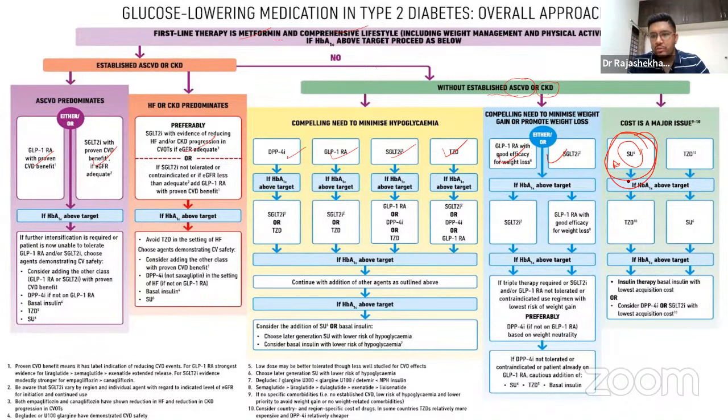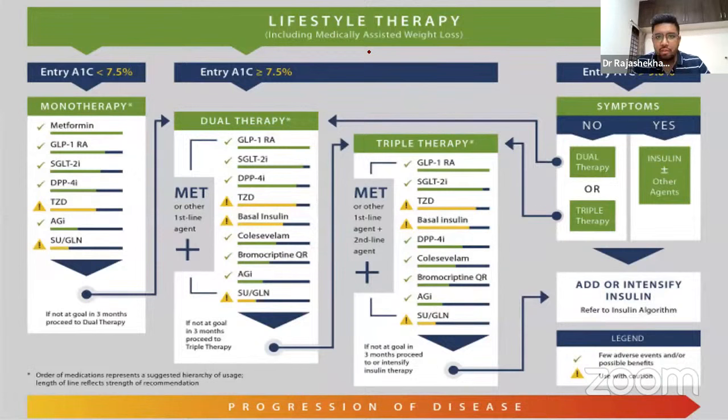In all other scenarios — ASCVD, CKD, or where cost is not limiting — sulfonylureas are no longer the preferred second agent. ACC guidelines similarly place sulfonylureas last in mono-, dual-, and triple-therapy categories. Their side effect profile must still be carefully addressed.